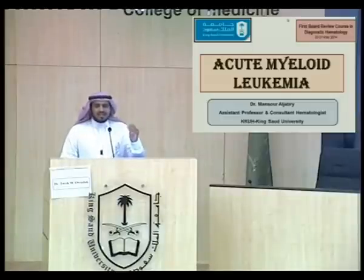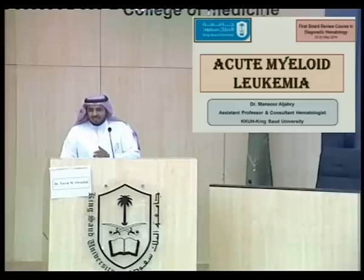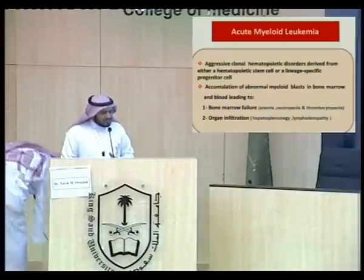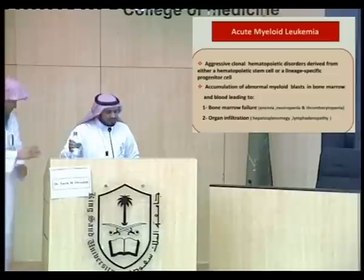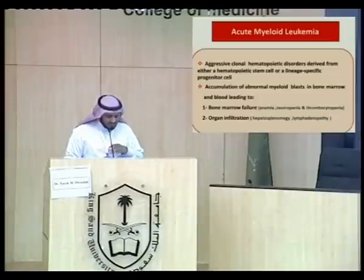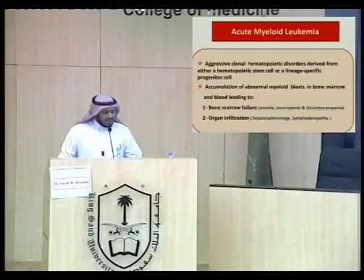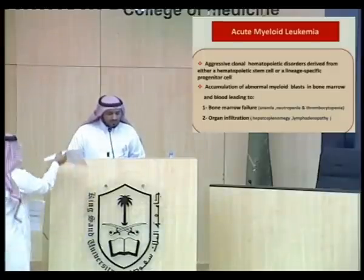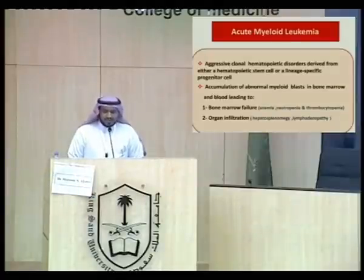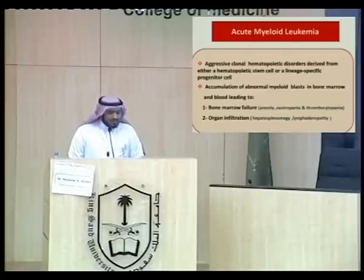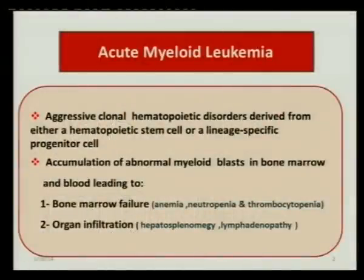Don't be surprised if you see a highly generalized slide followed by a highly specialized slide. Acute myeloid leukemia is an aggressive clonal hematopoietic disorder derived from either hematopoietic stem cells or lineage-specific progenitor cells, which manifests as accumulation of abnormal myeloid blasts in bone marrow and peripheral blood, leading to bone marrow failure manifested as anemia, thrombocytopenia, and neutropenia, and also to organ infiltration leading to hepatosplenomegaly and rarely lymphadenopathy.